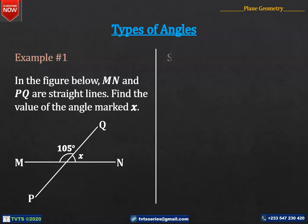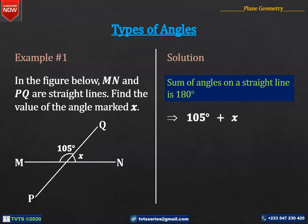And here is the solution. The first hint is that the sum of angles on a straight line is 180 degrees. Angles 105 degrees and X are on a straight line. Therefore, 105 degrees plus X is equal to 180 degrees.